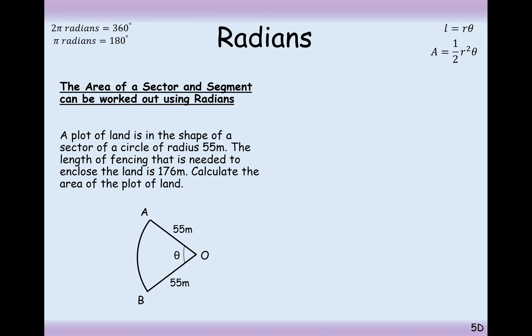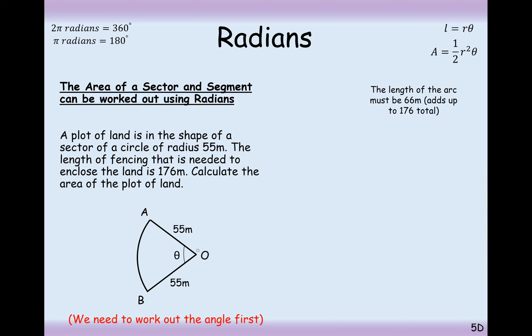Effectively what we've got here is a sector diagram where the whole perimeter is equal to 176. So the length of the arc must add up to 66 metres, which then makes this total perimeter equal 176. From this we can work out the theta value by using length equals r theta. So 66 equals 55 theta, divide by 55 and you get 1.2 radians.